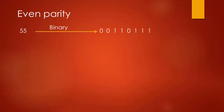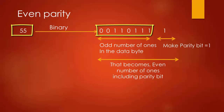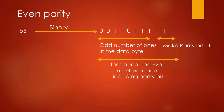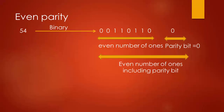In the case of even parity, the parity bit is set to one to make the entire number of ones, including the parity bit, even. So if the number of ones in a given set of bits — not including the parity bit — is odd, the parity bit will be set to one, making the total count even. If the number of ones is already even, the parity bit is set to zero.